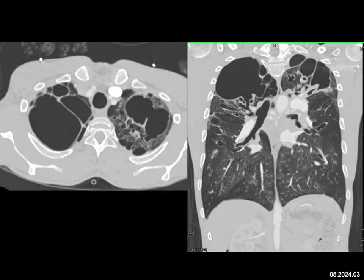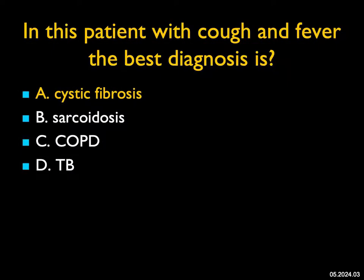TB is usually inflammatory — airspace filling and the like. You can get bronchial thickening, but not such a diffuse, almost symmetric pattern. The best answer in this case is cystic fibrosis. With cystic fibrosis, the bronchi are dilated, you can see mucus plugging, and you can see areas of lung destruction, as we do see in this case.